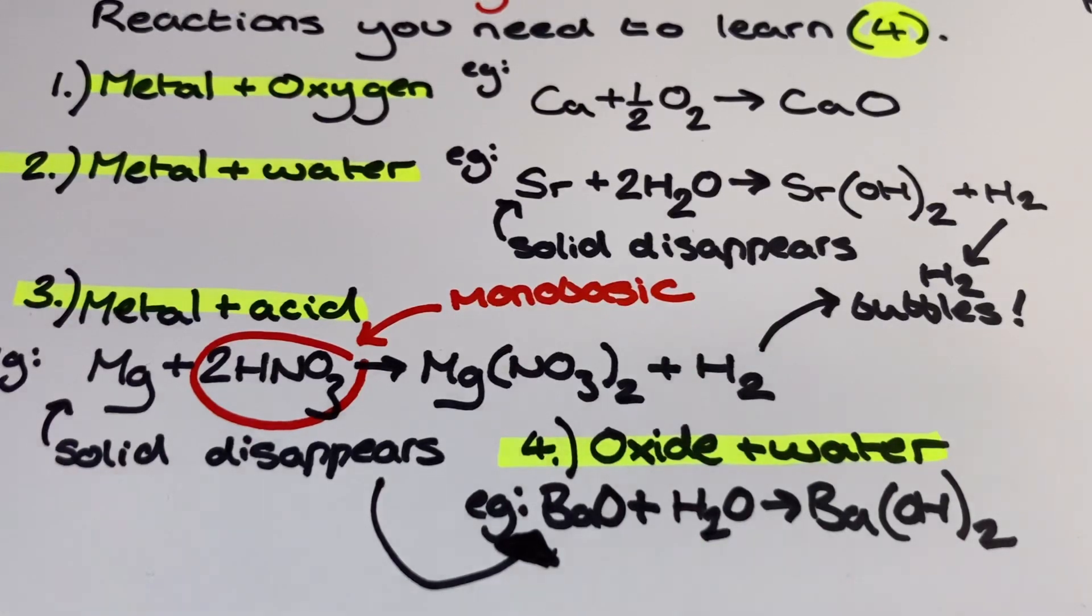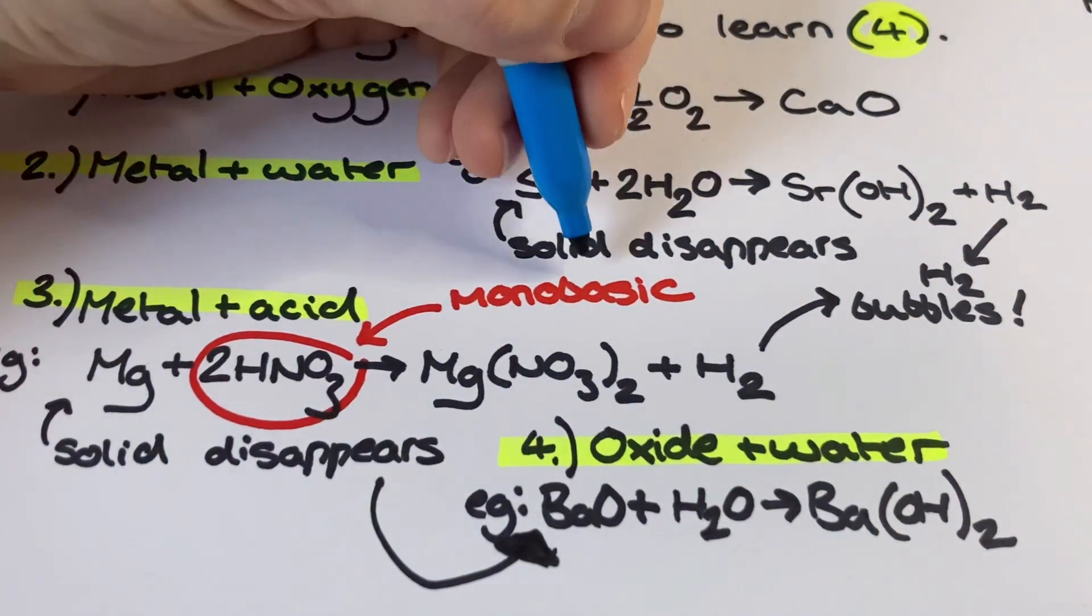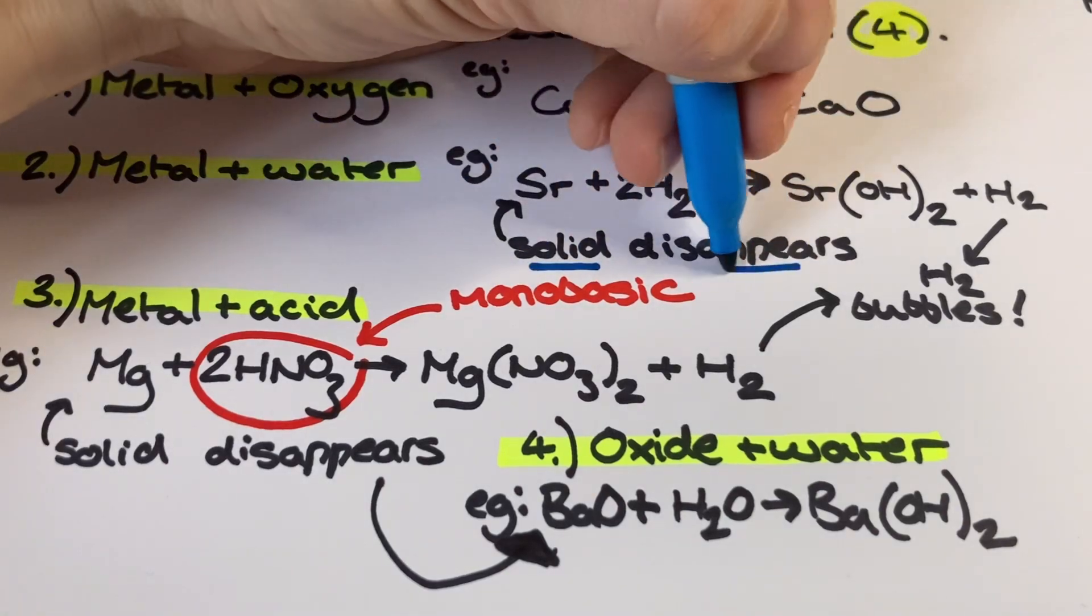The fourth reaction is the oxide and water that I mentioned at the start. This isn't demonstrating oxidation of the group 2 metal, but it is a reaction that involves the group 2 metal in its oxide that you need to be aware of according to your specification.